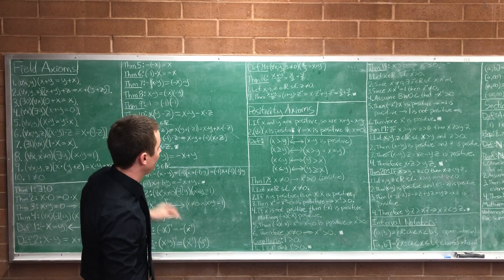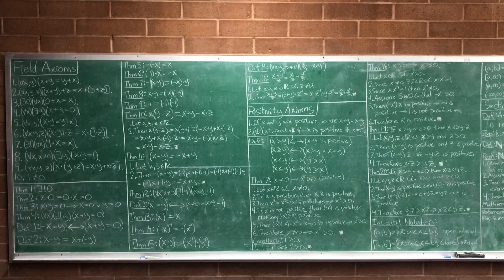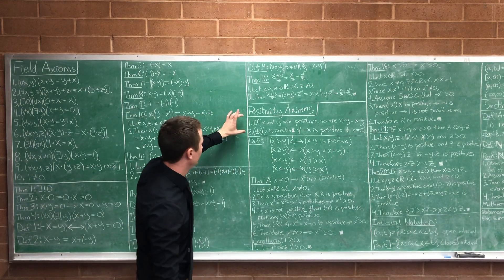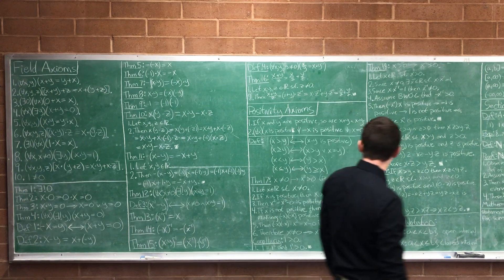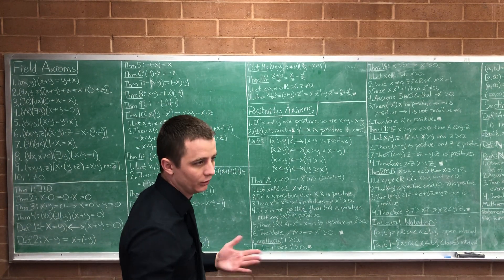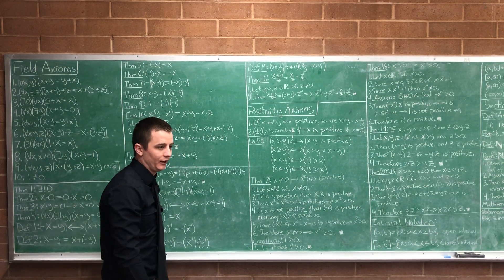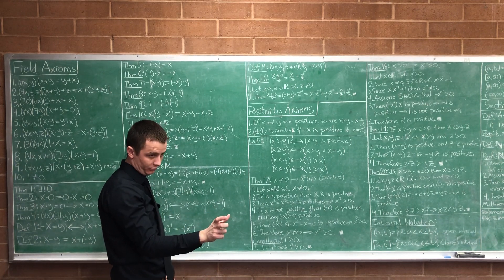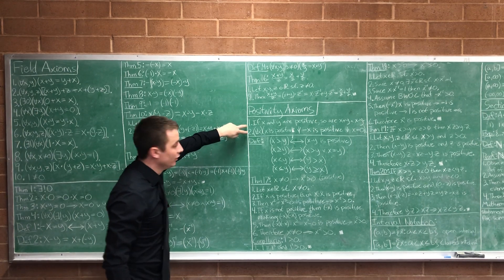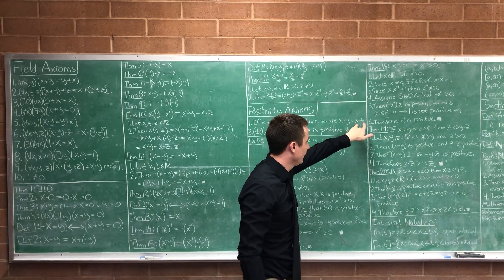That is the end of our proofs using the field axioms. Now we're moving to our next set of axioms. Throughout this class there are three sets of axioms: the field axioms, the positivity axioms, and the completeness axioms. We're done with the field axioms and now moving to the positivity axioms, which are what give us order in our set — a way of saying this number comes before or after another. The positivity axioms say there is some subset of the real numbers we'll call positive, and if x and y are positive, then so are x plus y and x times y.